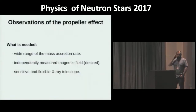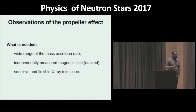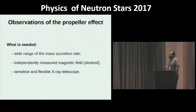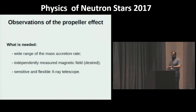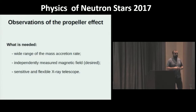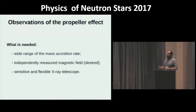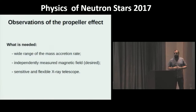In the famous millisecond pulsar SAX J1808, multiple transitions between accretion and propeller regimes were observed in the tail of an outburst. We decided to use modern telescopes to obtain as many examples of such transitions as possible. We need to catch outbursts from transient X-ray pulsars covering a wide range of mass accretion rates, ideally with independently measured magnetic field values to calibrate the method. For this project we used the Swift X-ray Telescope.